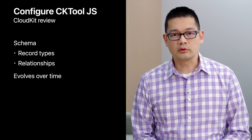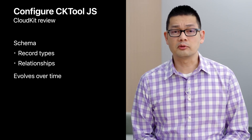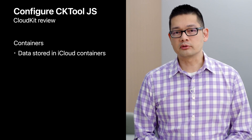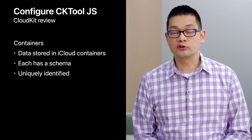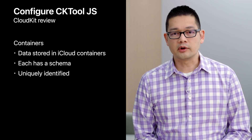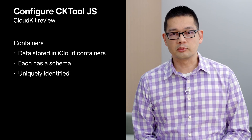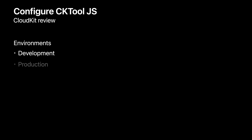As you develop your apps, you'll evolve your schema, and over the lifetime of your app, you'll likely have several versions of it. While my app's schema describes the structure of the data I want to store in iCloud, my app container is where that data is stored. A container has a unique identifier and is associated with a developer team. There are two environments to keep in mind when working with CloudKit. The development environment is a safe place to make changes without disrupting users — this is where you should be testing and developing changes to your schema. When users interact with your app, they'll be interacting with the production environment, which contains the live data for your app.